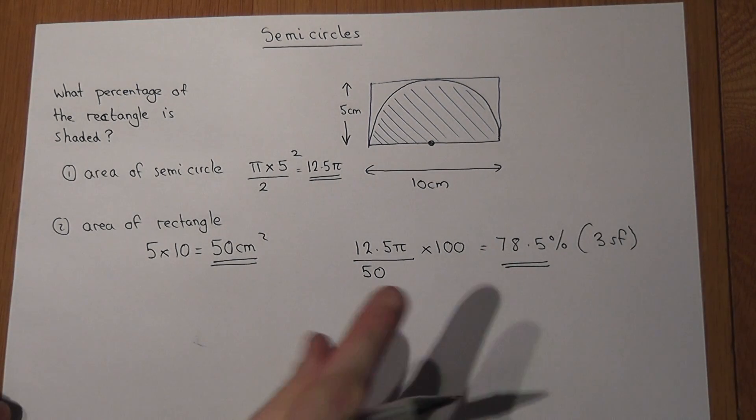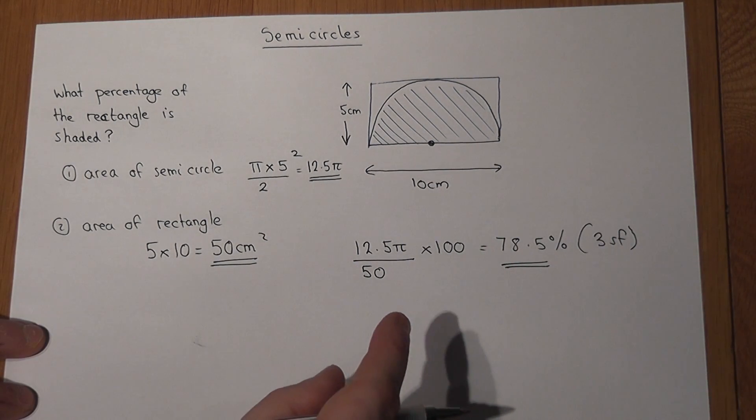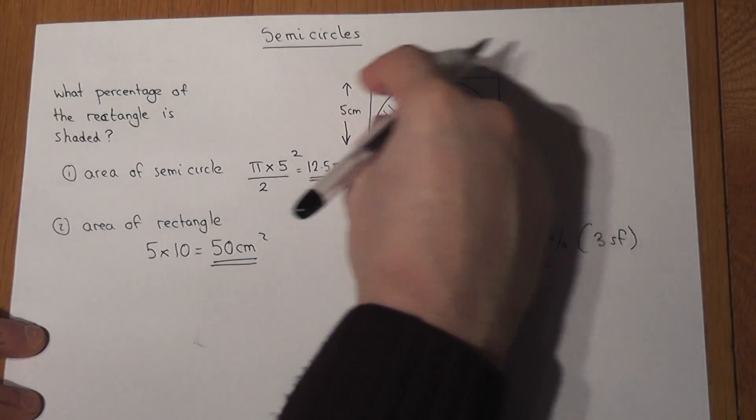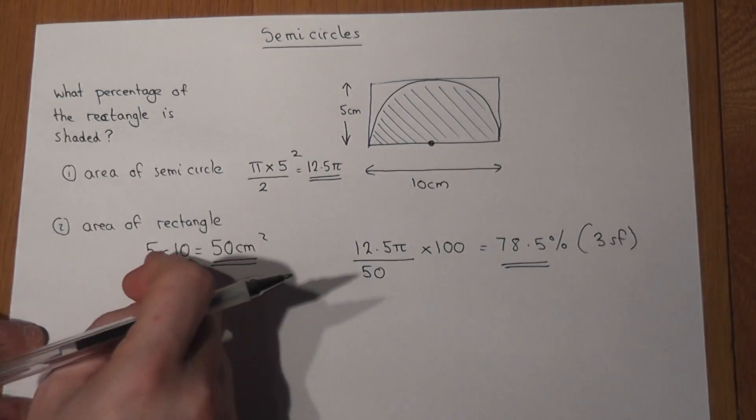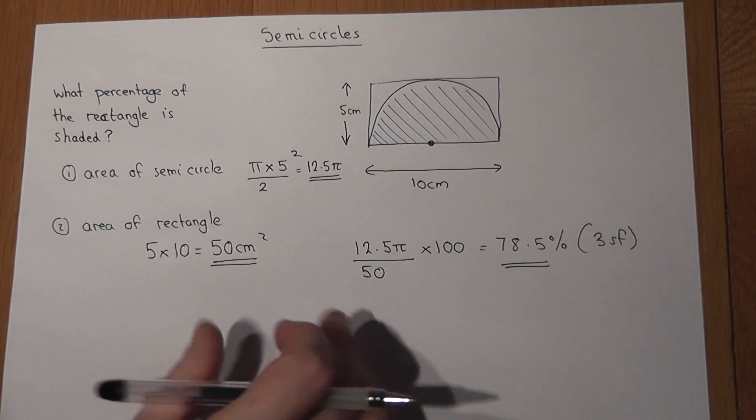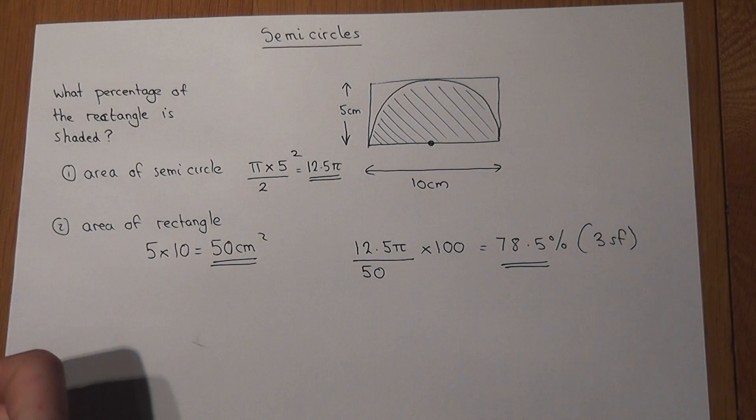And again, I think the key thing here about the semicircle and the rectangle is the 5 being the radius, and therefore the width of the rectangle being double the height of the rectangle.